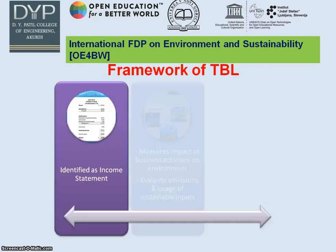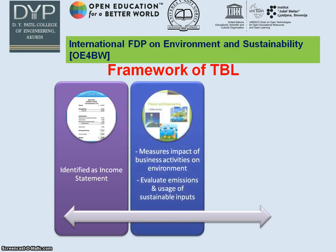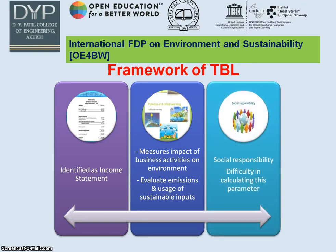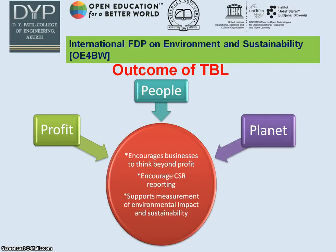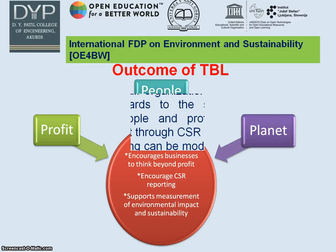In the TBL framework, the profit aspect talks only about the income statement. The environment aspect measures the impact of business activities on the environment and evaluates emissions and uses of sustainable inputs. The people aspect represents social responsibility — this parameter cannot be quantitatively calculated, but qualitatively you can see how people have been developed and living standards improved. Together, profit, people, and planet encourage businesses to think beyond profit, support CSR reporting, and support measurement of environmental impact and sustainability.